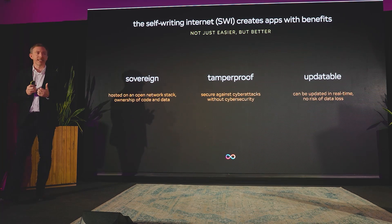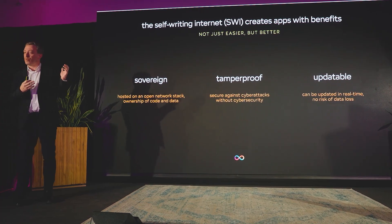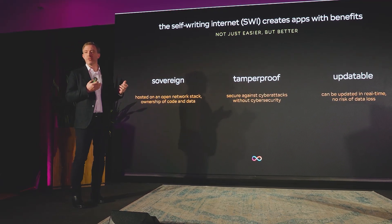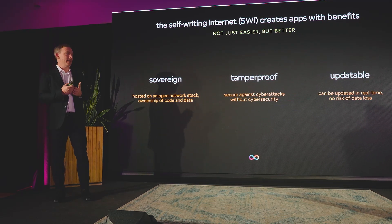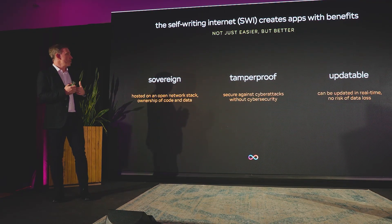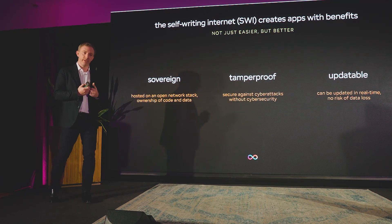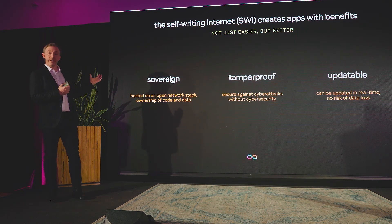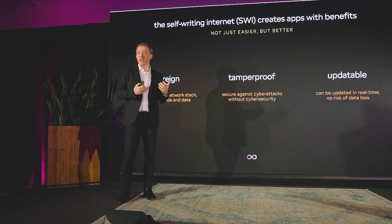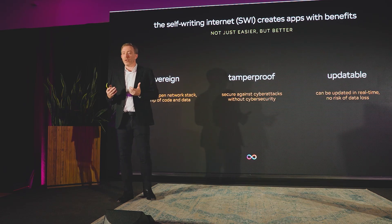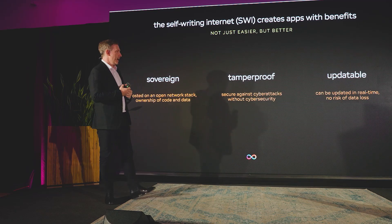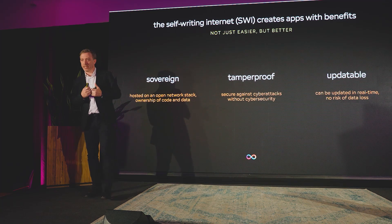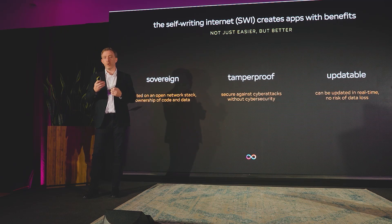The self-writing internet creates apps with benefits. It isn't something that builds only on traditional IT. With the self-writing internet we pursue, when people talk to the internet to create an app, it's sovereign — it's hosted on an open network stack and the creator of that app owns the underlying code, owns all the data, and has complete freedom. It's also tamper-proof, meaning the website, web app, or internet service you created is immune to traditional forms of cyber attack.